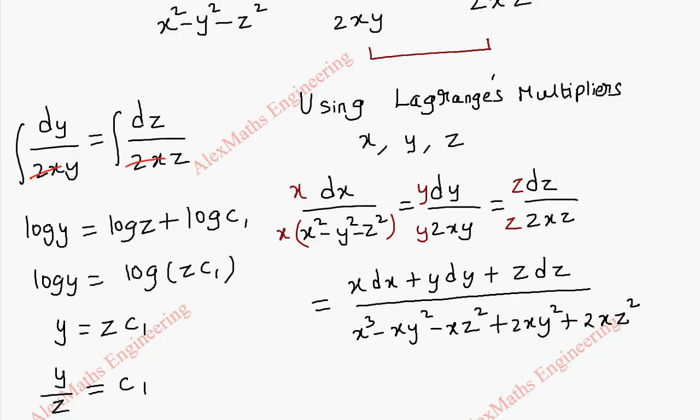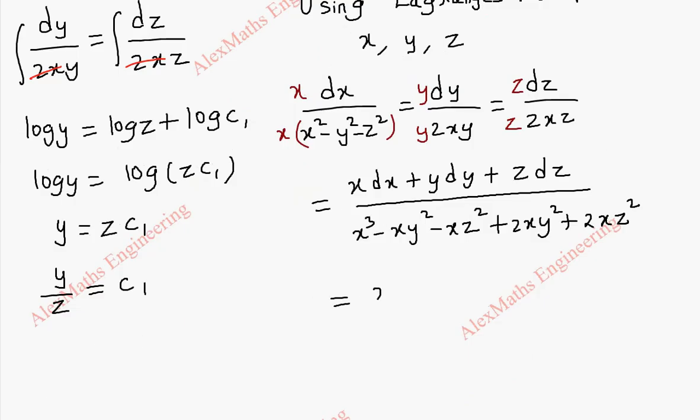Third term is 2xz squared. Now simplifying further this is x dx plus y dy plus z dz whole divided by x cubed. Now combining these two we get 2xy squared minus xy squared will become plus xy squared. Again combining the other two we get xz squared.